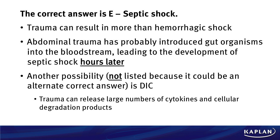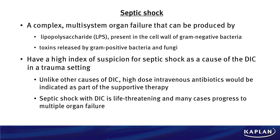Another possibility not listed, because it could be an alternate correct answer, is DIC. Trauma can release large numbers of cytokines and cellular degradation products, which can result in diffuse intravascular coagulation. Septic shock is a complex multi-system organ failure that can be produced by two things: lipopolysaccharides, present in the cell wall of gram-negative bacteria, and toxins released by gram-positive bacteria and fungi. Have a very high index of suspicion for septic shock as a cause of DIC in the setting of trauma. Unlike other causes of DIC, such as hypovolemic shock, you need high doses of intravenous antibiotics as part of the therapy, in addition to supportive care. Septic shock with DIC is life-threatening, and many cases progress to multiple organ failure rapidly.